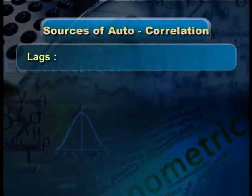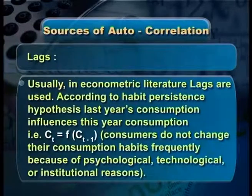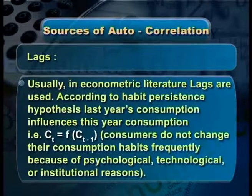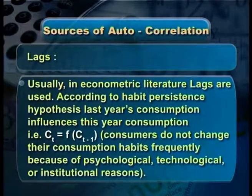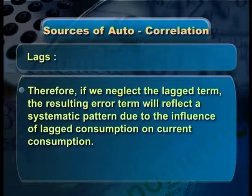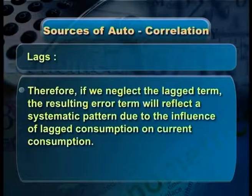Another important source is lags. In economic literature we use lags extensively. There is the habit persistence hypothesis propounded by Brown in 1951, where Ct is a function of C(t−1). Current consumption depends on previous year's consumption habits, because consumers do not change their habits frequently due to psychological, technological, or institutional reasons. If we neglect the lagged term, the error term reflects a systematic pattern due to the influence of lagged consumption.